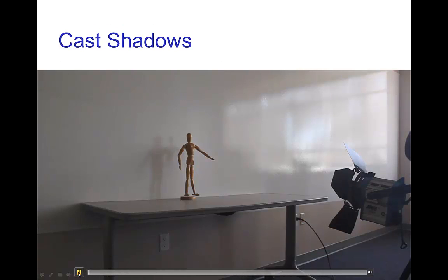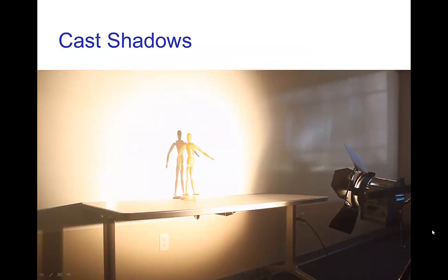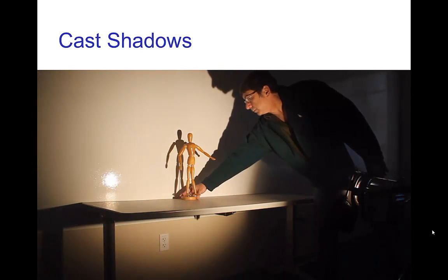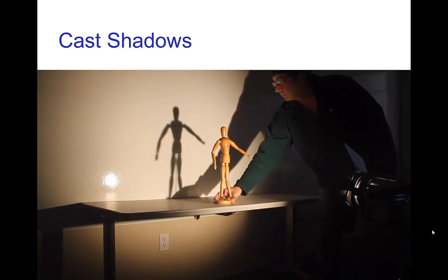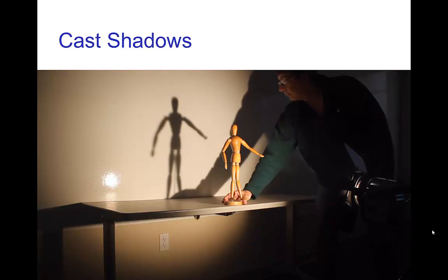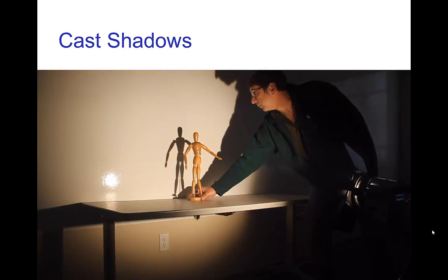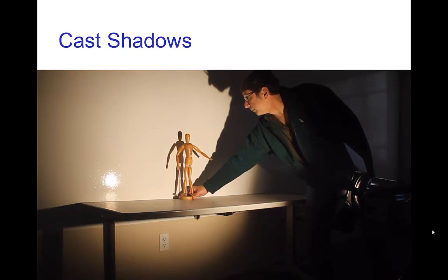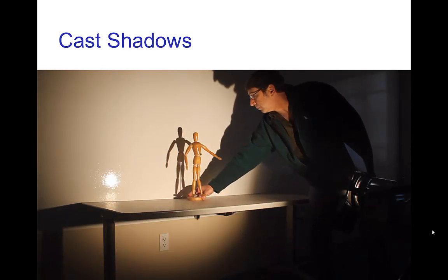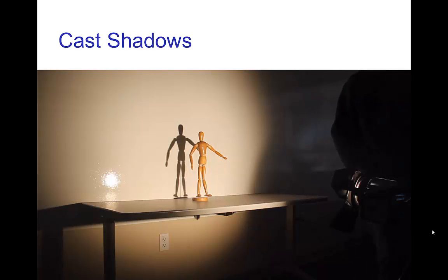Let's look at a little clip here where we have a light, an object, and a wall that the shadow is being cast upon. Just focusing on the shadow, you see how it changes in size and sharpness as we position the object at different distances from the wall.